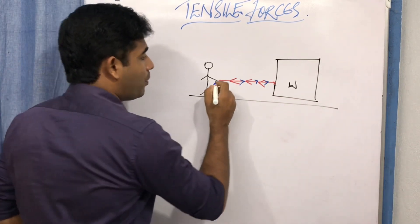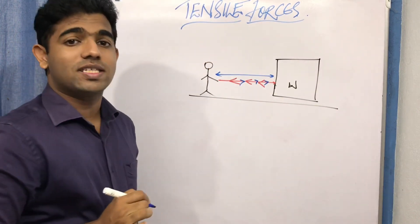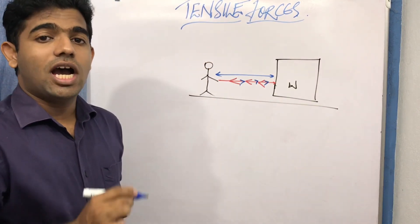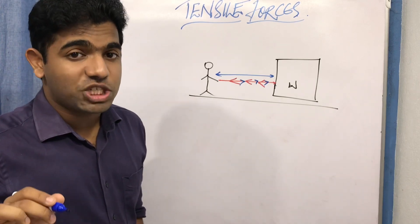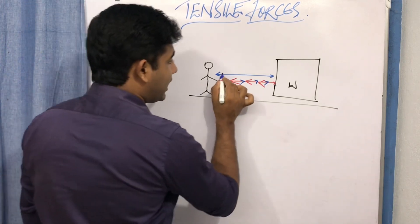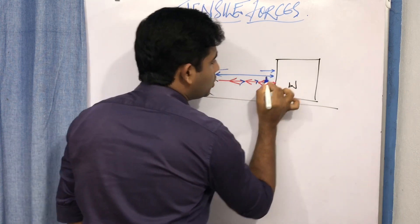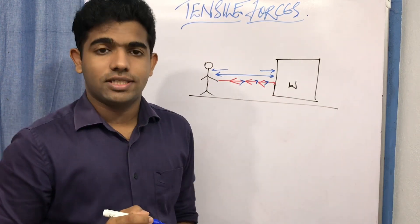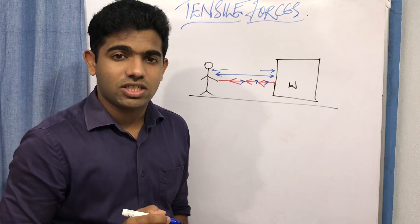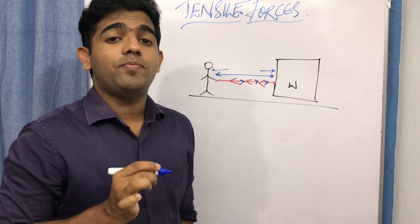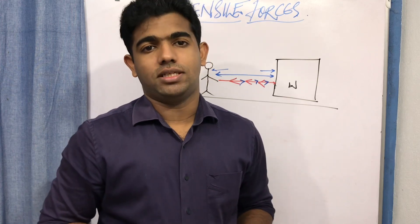The rope is under constant tension forces. We can say the rope is under tension because there is a pull in one direction and a pull in the opposite direction. Tension forces exist when there is an opposite pull on the same object.